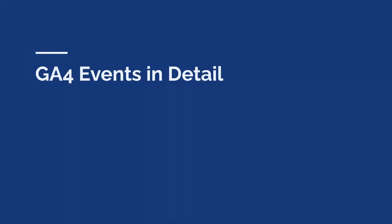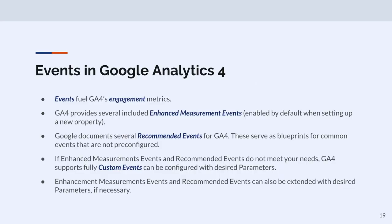Let's talk more about GA4 events because that's a pretty critical concept. Events fuel GA4's engagement metrics. GA4 provides several enhanced measurement events out of the box — these should be enabled by default when you install a new GA4 property, though sometimes they don't get turned on in the auto upgrade. Google also documents many recommended events — think of them as blueprints or recipes for common events that are not pre-configured. You can also do fully custom events if enhanced measurement and recommended events don't meet your needs. And using the custom events functionality, you can effectively extend enhanced measurement or recommended events.